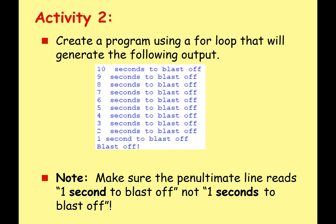Let's try something a little bit different. Create a program using a for loop that will generate the following output. It's a countdown timer, maybe for like a NASA rocket. 10 seconds to blast off, 9 seconds to blast off, 8 seconds to blast off, all the way down to 1 second to blast off, and then blast off. If you look here, this line is a little different because we don't have an 's' at the end - it's just one second to blast off.